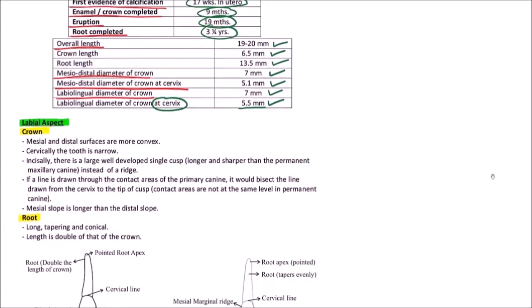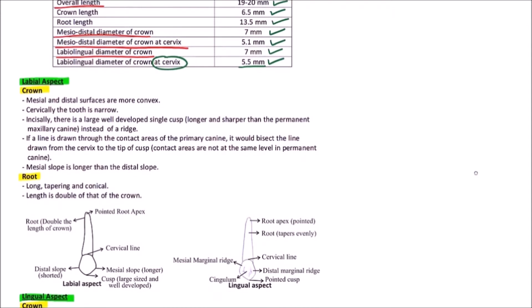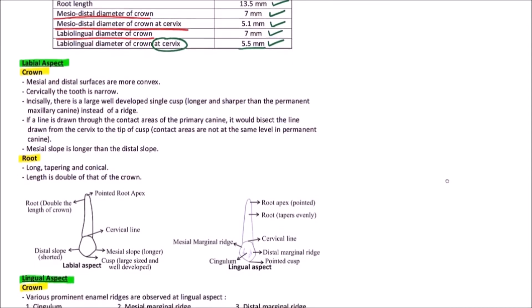Now we will observe the primary maxillary canine from various aspects. First is the labial aspect. The crown, the mesial and distal surfaces are more convex. The cervical region shows that the tooth is narrow.